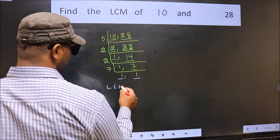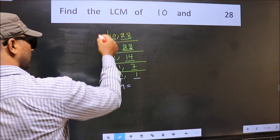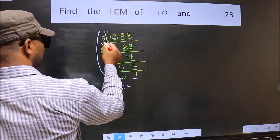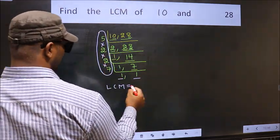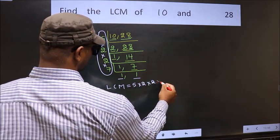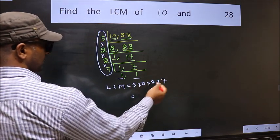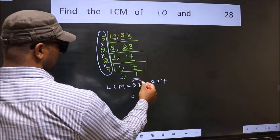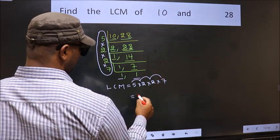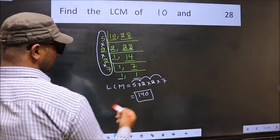So our LCM is the product of these numbers. That is 5 into 2 into 2 into 7. So let us multiply these numbers. 5 into 2, 10. Into 2, 20. Into 7, 140. So 140 is our LCM.